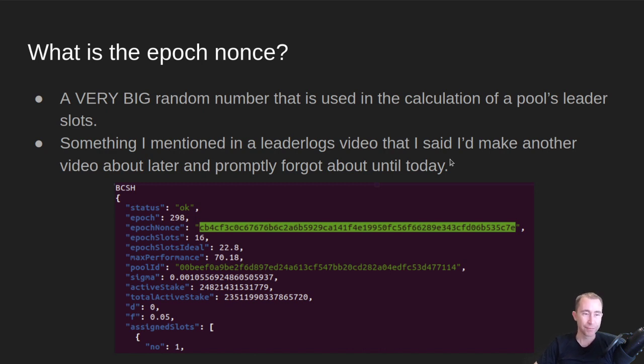So what is it? It is a very big, long, random number that is used in the calculation of a pool's leader slots. So this is what it looks like. It's usually represented as a hex string. So we just have all the bytes of it here. Instead of just representing as a base 10 number, we represent it as a base 16 number. And it is 256 bits long. It's very long, probably enough to represent the number of atoms in the observable universe. So it's not something that even a computer can guess.